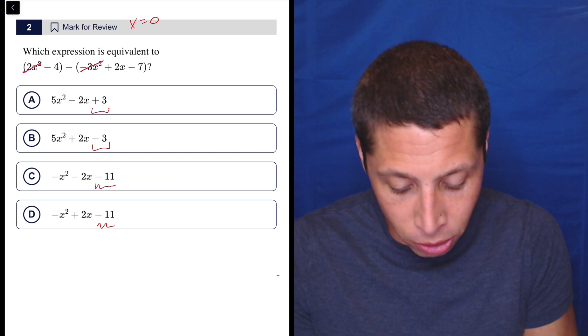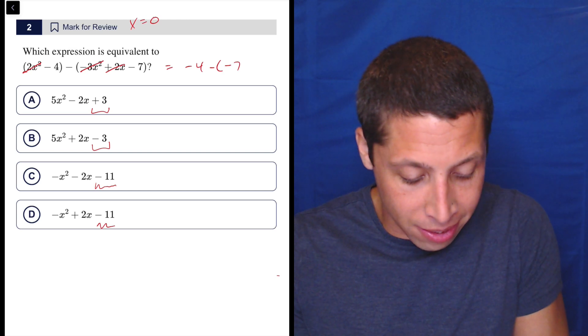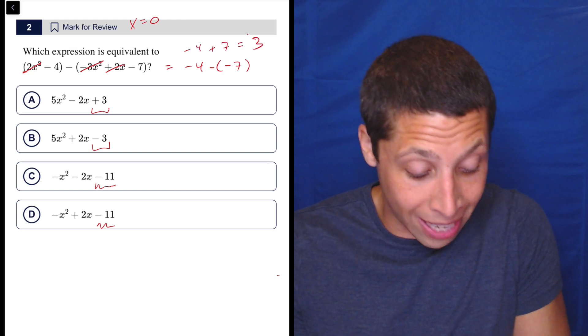What happens to this expression when I put in zero? Well, everything with an x is going to get killed off. So what do I really have? Negative four minus negative seven. That's negative four plus seven. That's seven minus four. That's three.